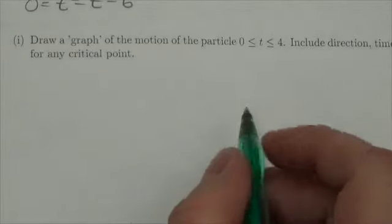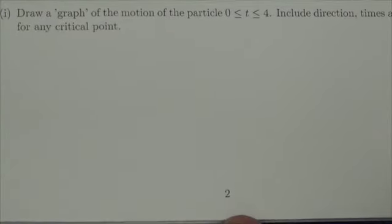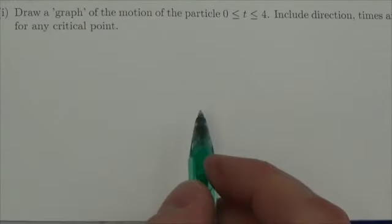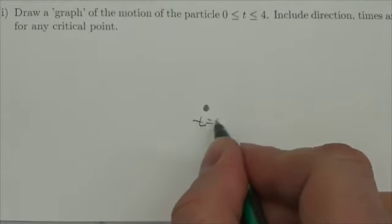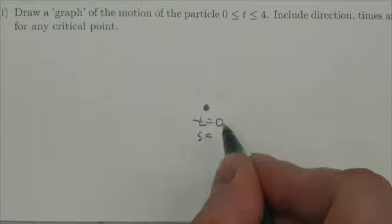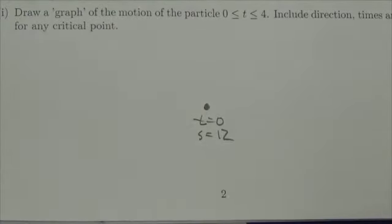Now, what we're going to do to do this, the word graph is in quotes here, because this is a little bit of a different graph. We're going to start right here. This is when time is equal to 0. And when time is equal to 0, if you look back to the original expression there, if you just plug 0 in, you'll see that it's 12, that our displacement here is 12.